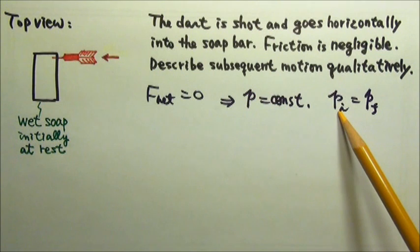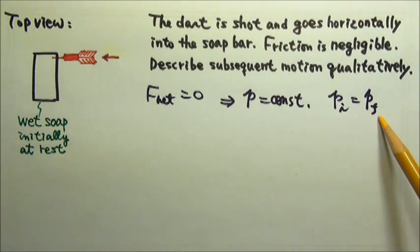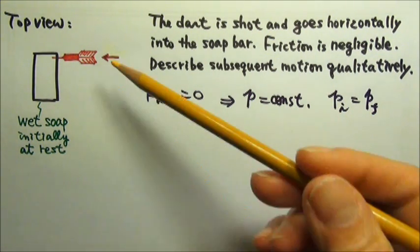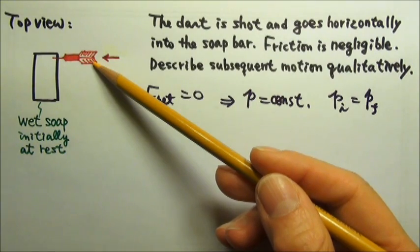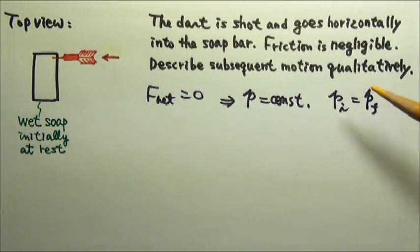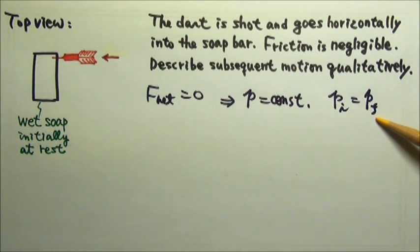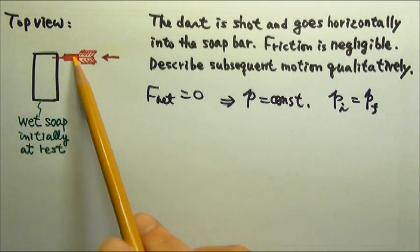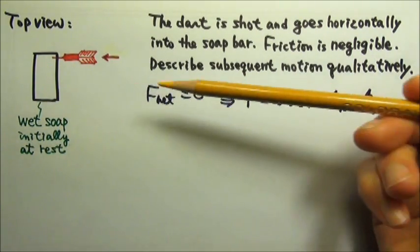So the whole system's initial momentum equals the final momentum. Initially, the dart is the only one with momentum, and the dart has a momentum to the left. That means the final momentum also goes to the left. So after the collision, the combination would travel to the left.